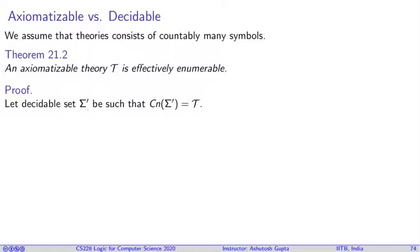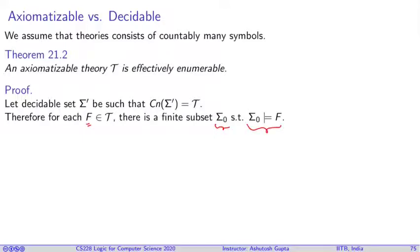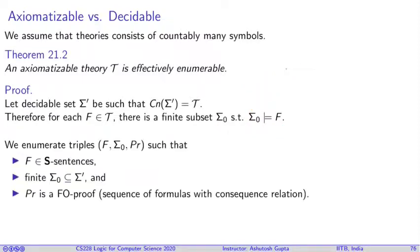Since T is an axiomatizable theory, there must exist a sigma prime such that consequence of sigma prime is this theory T. Let's suppose we pick a formula F in this theory T. Then there must exist sigma not such that sigma not implies F, and this is because of compactness.